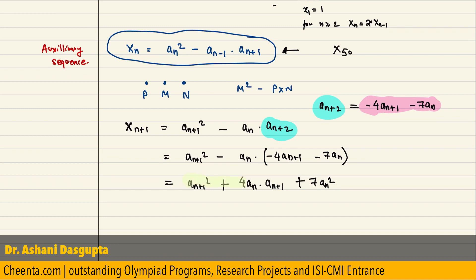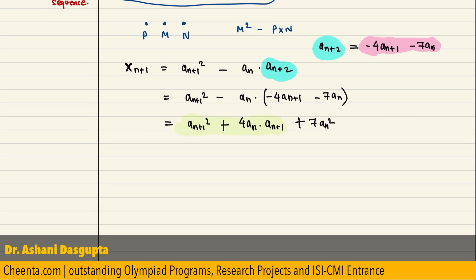Now, let us focus on this first part. There is a very interesting thing that will happen. Let us take a(n+1) plus 4 an inside the parenthesis. So, I just took a(n+1) common, so plus 7 an square.